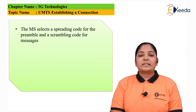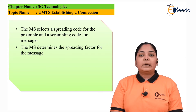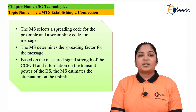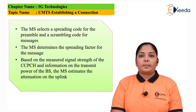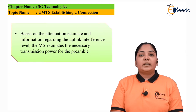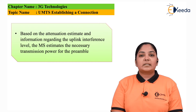The mobile station also acquires information on available codes, accessible time slots, the possible spreading factor for messages, interference level on the uplink, and the transmitter power of the CC-PCH (Common Control Physical Channel). The mobile station then selects a spreading code for the preamble and scrambling code for the messages, and determines the spreading factor — i.e., how much the signal needs to be spread in the spectrum. Based on the measured signal strength of the CC-PCH and the base station's transmit power information, the mobile station estimates the attenuation on the uplink.